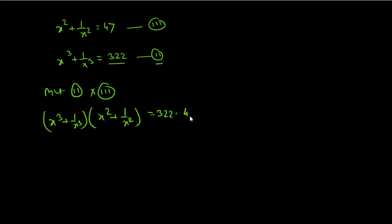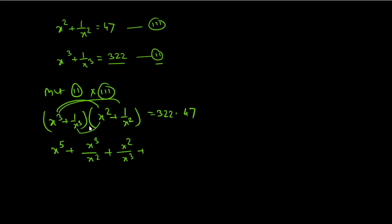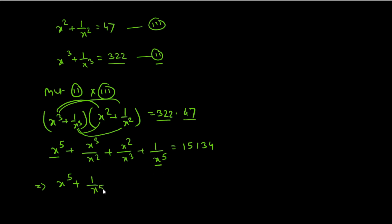Expanding the left side: x³ times x² gives x⁵; x³ times 1/x² gives x³/x² = x; 1/x³ times x² gives x²/x³ = 1/x; and 1/x³ times 1/x² gives 1/x⁵. Multiplying 322 by 47 gives 15,134. So we have x⁵ + 1/x⁵ + x + 1/x = 15,134.